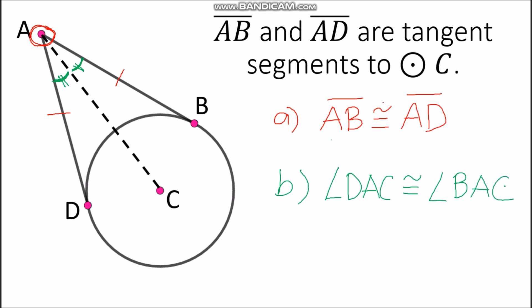So these are the two things we can conclude when segments are tangent to a circle: first, the segments are congruent; and second, the angles formed by the tangents and the segment from the external point to the center are also congruent.